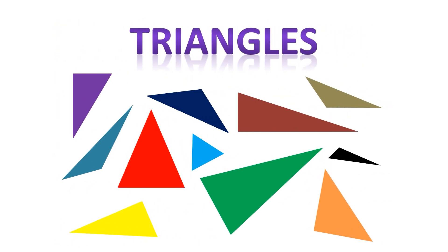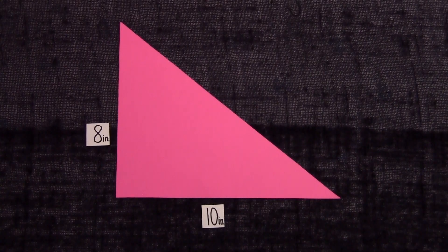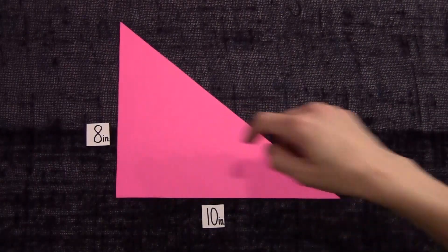Area of a triangle equals 1 half base times height. Take this right triangle here with a base of 10 inches and a height of 8 inches.